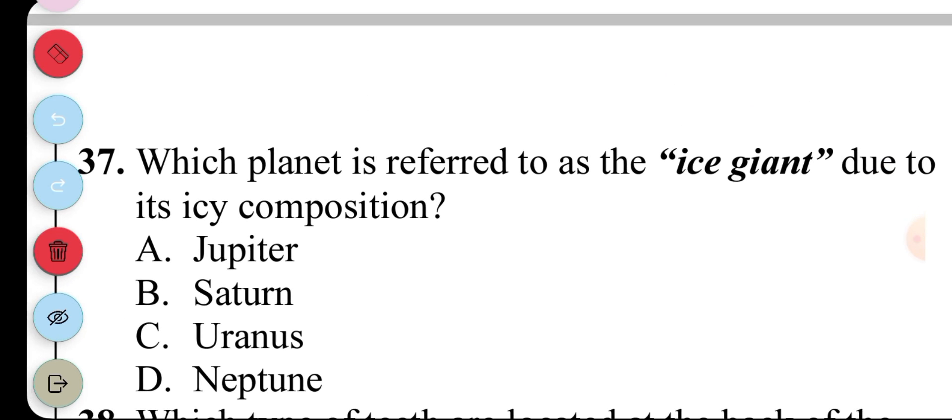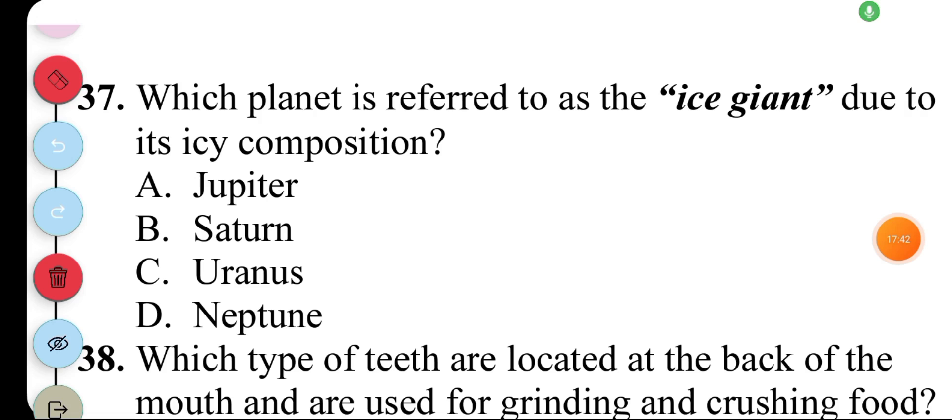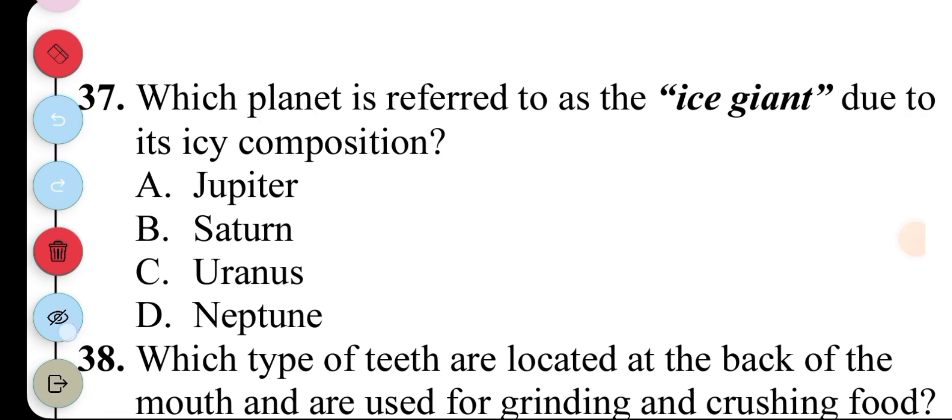Question 37. Which planet is referred to as the ice giant due to its icy composition? A. Jupiter, B. Saturn, C. Uranus, D. Neptune. The answer to question 37 is C. Uranus.